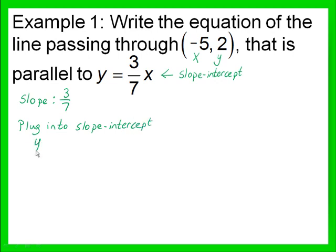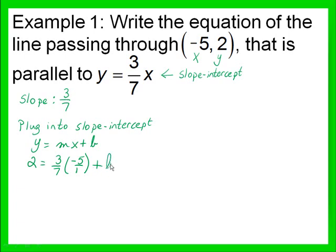So we have y equals mx plus b. Our y number is 2, our slope is 3 over 7, and our x number is negative 5. Since we have fractions, let's write negative 5 as the fraction negative 5 over 1, plus the y-intercept b. Simplifying the right-hand side, we have 2 equals negative 15 over 7 plus b.